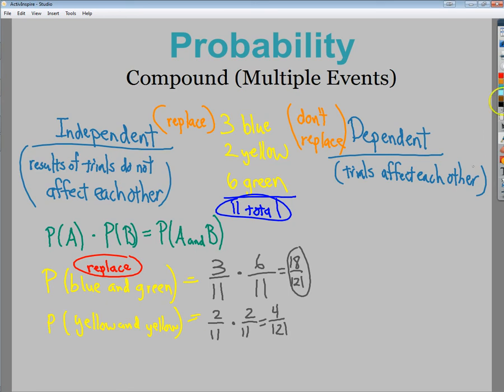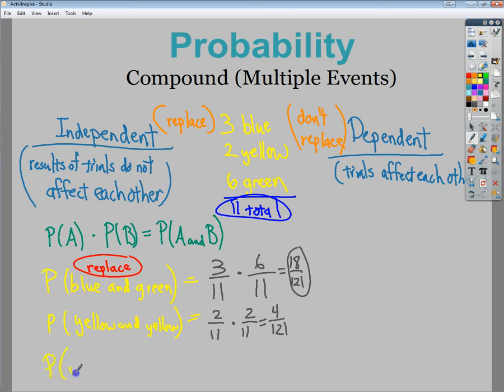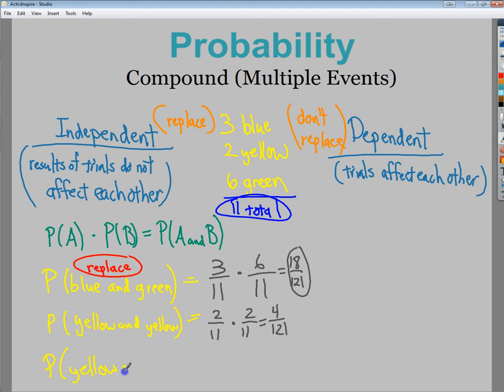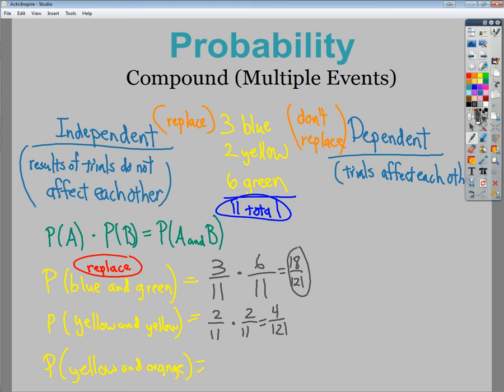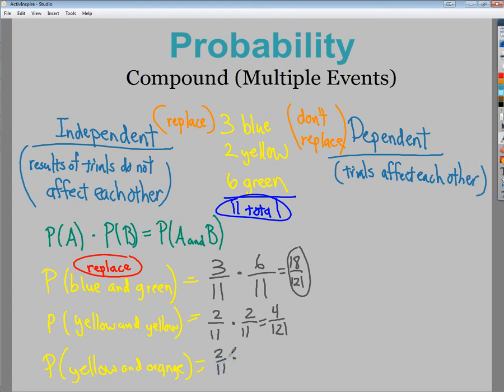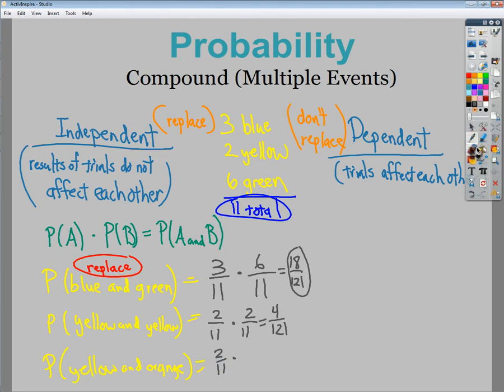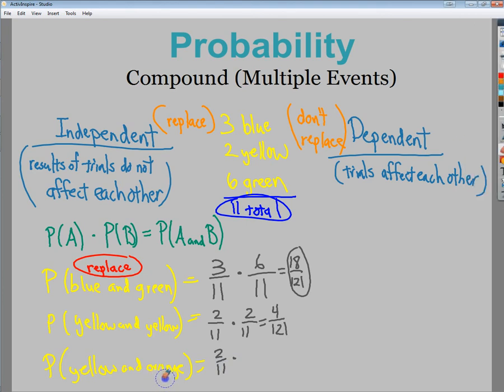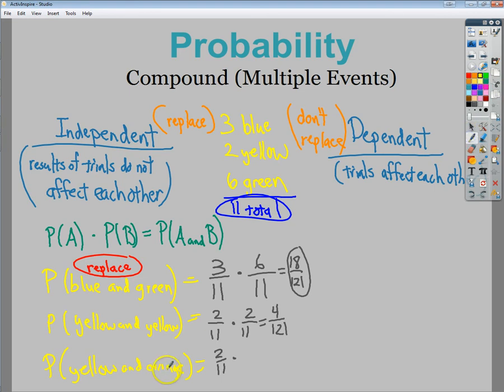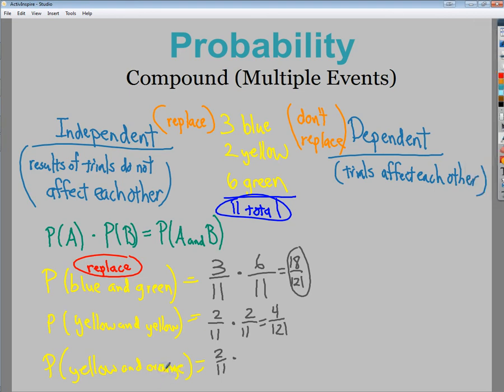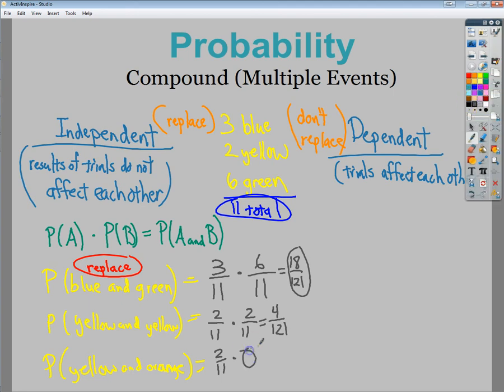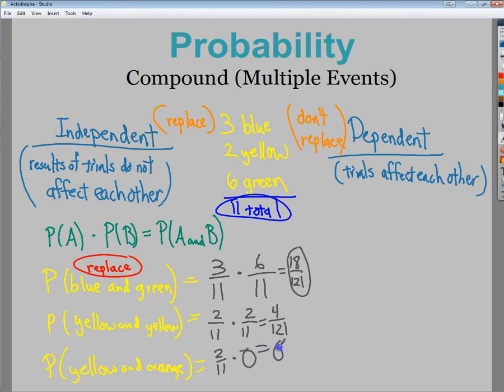What's the probability of getting a yellow one and an orange one? Here's the deal. If one of them doesn't exist, there's no chance of doing both at the same time. Just because you could do yellow, you could totally get 2 over 11 here. But it won't make any difference because multiple events require you to treat it as you're multiplying them together. Anytime you multiply by a zero, it kind of goes away. There's no oranges, so 0 over 11. So you end up with 0. If you have one of the two that's impossible, they're both impossible, because they have to work as a group.